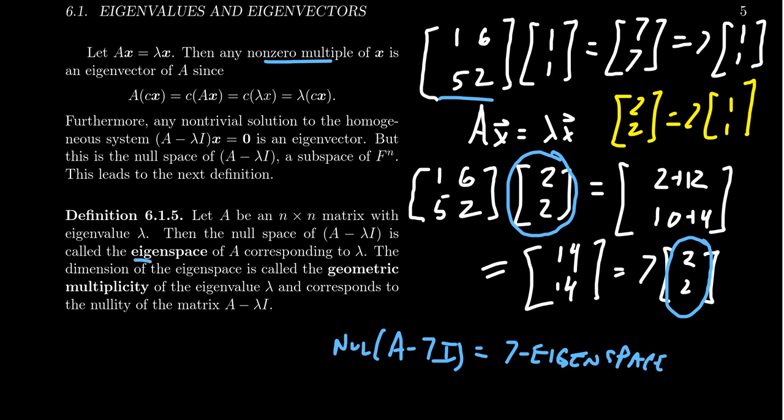In particular, an eigenspace given a matrix A, which is n by n, is going to be the null space of the matrix A minus λI. If λ is an eigenvalue, this eigenspace will have dimension greater than 1. The dimension of the eigenspace is what we call the geometric multiplicity of the eigenvalue. So we can have multiple eigenvectors for a single eigenvalue.